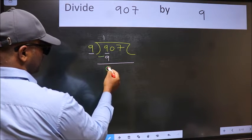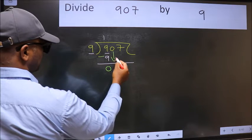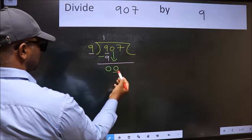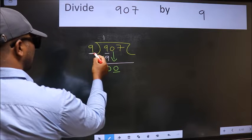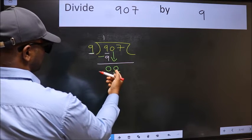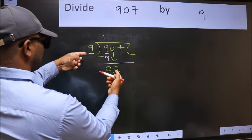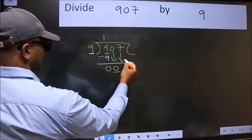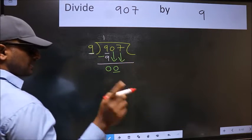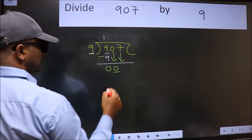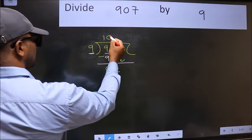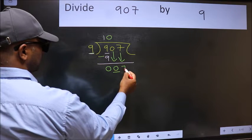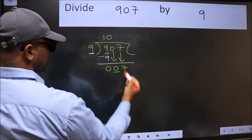After this, bring down the beside number. So 0 comes down. Here we have 0 and here 9. 0 is smaller than 9, so we should bring down the second number. And the rule to bring down the second number is we should take 0 here. Then only we can bring down this number.